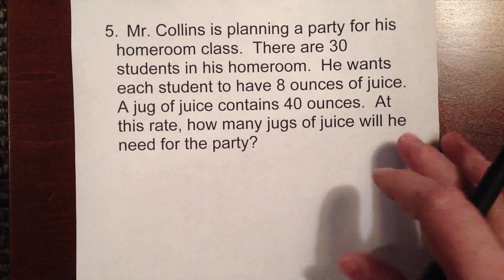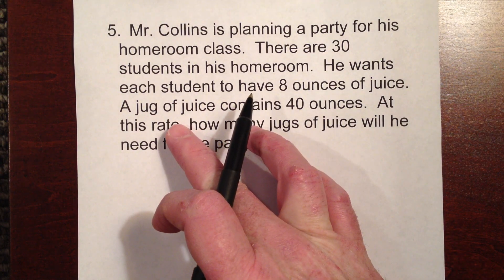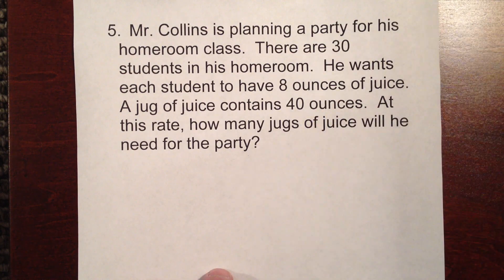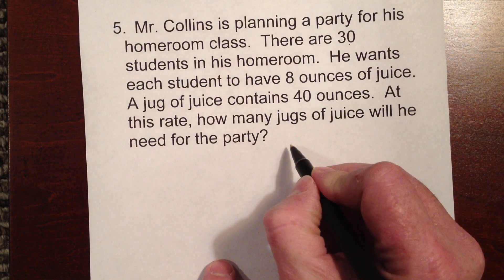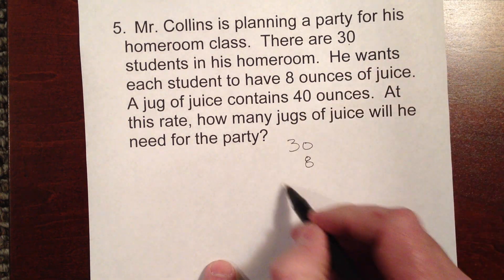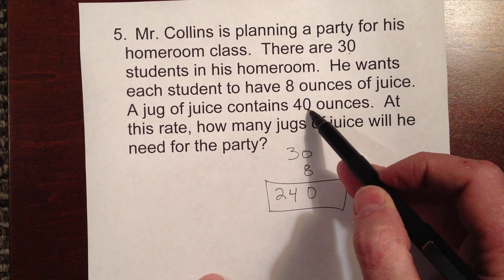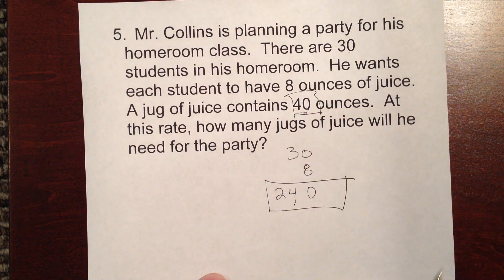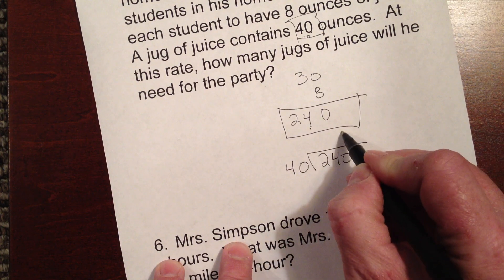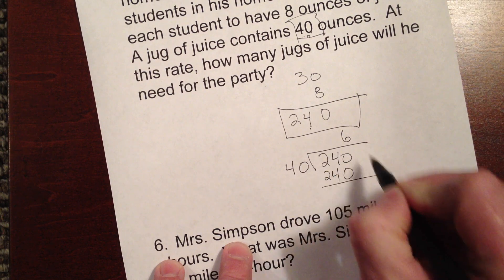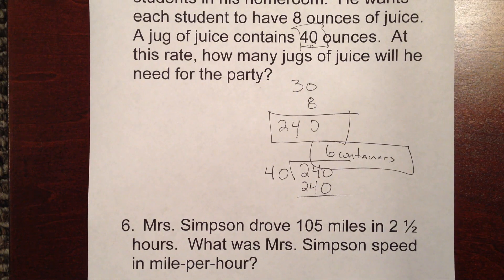Mr. Collins is planning a party for his homeroom class. There are 30 kids in the homeroom, and he wants to give each of them 8 ounces of juice. A jug of juice contains 40 ounces. So at this rate, how many jugs of juice will he need for the party? Well, we know that we have to multiply 30 times 8 to figure out how much juice we need in all. We need 30 times 8, 30 kids times 8 ounces for a total of 0, 240 ounces. We need 240 ounces. Well, if each container is 40 ounces, can I just divide this by this, by 40, and see how many containers I'll need? So we'll say 240 divided by 40. And this will be 6. Let's make sure we're right here. Yes, 6 containers. If you're having a hard time with that one, I want you to go back and watch this video a few times because this is one of the more difficult problems.